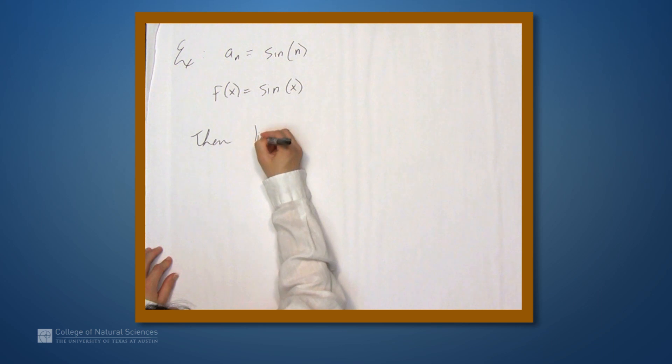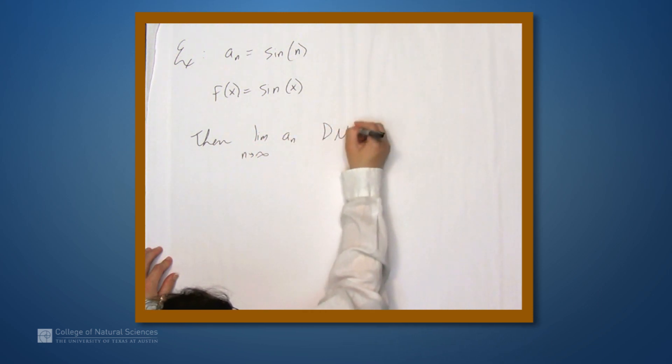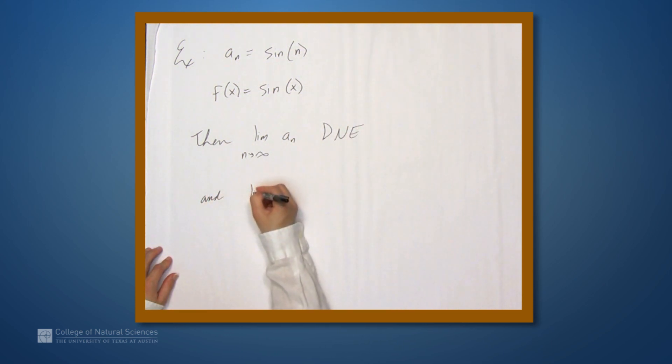Then the limit as n approaches infinity of a sub n does not exist, and the limit as x approaches infinity of f of x does not exist.